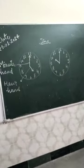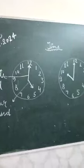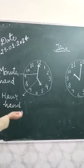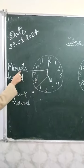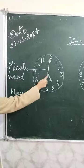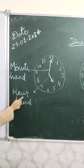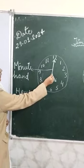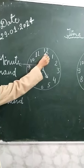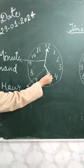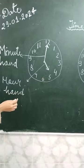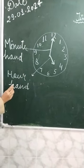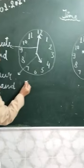Now look at the board. I have drawn some clocks on the board. There are two clocks. Starting with the first one — the long hand is the minute hand and the short hand is the hour hand. The minute hand is pointing towards twelve, and the hour hand is pointing towards five. So what is the time? It is five o'clock.